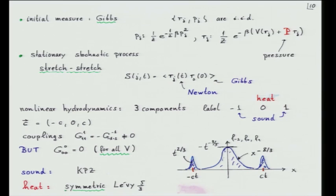It's a deterministic evolution, but I start in the stationary measure, and that defines a stationary stochastic process. The dynamics is deterministic, but I start with a stationary initial measure so it will be a stationary stochastic process.